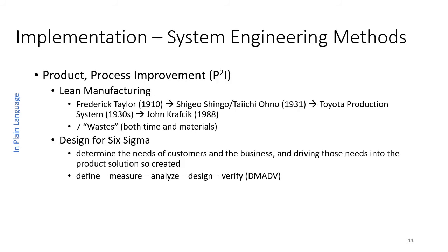The second pair of system engineering methods falls in the category of product process improvement, P-squared-I. The first is lean manufacturing and the second is design for Six Sigma, both called out in the System Engineering Handbook.